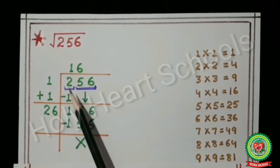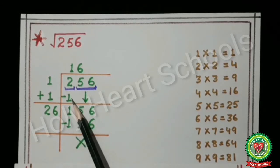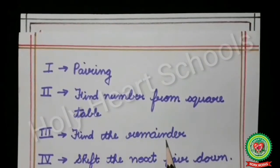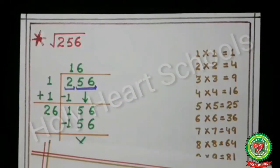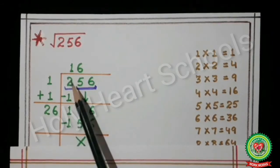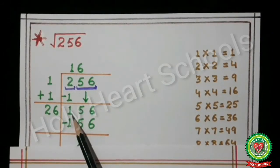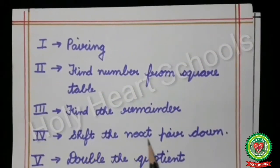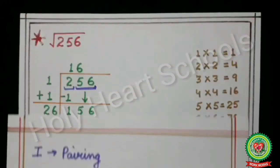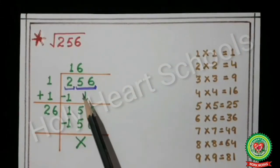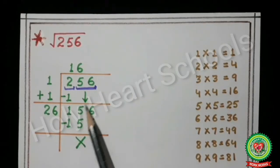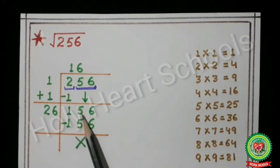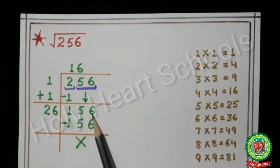Since 1×1=1, write 1 under the dividend. The next step is to find the remainder by subtracting 1 from 2, giving remainder 1. Then the next step is to shift the next pair down: shift 56 down and write it with the remainder, so 156 becomes our new dividend.